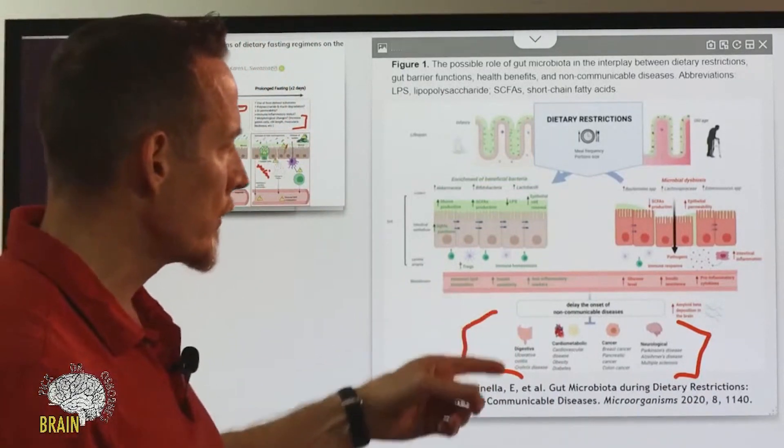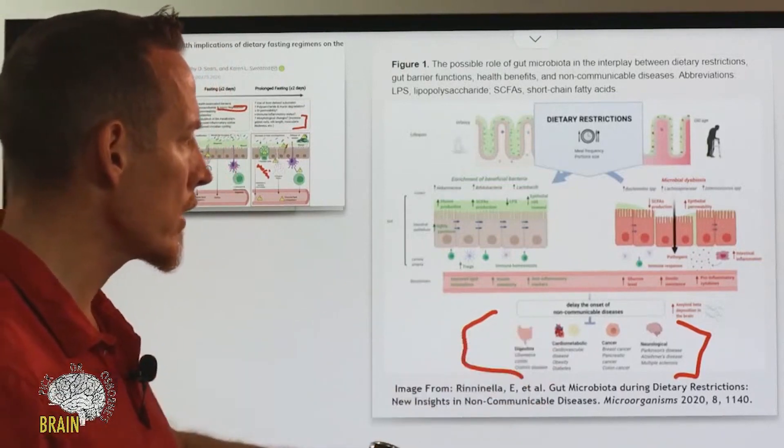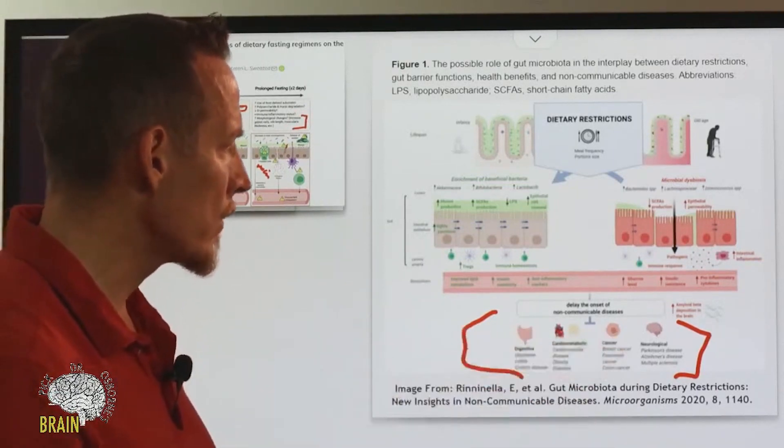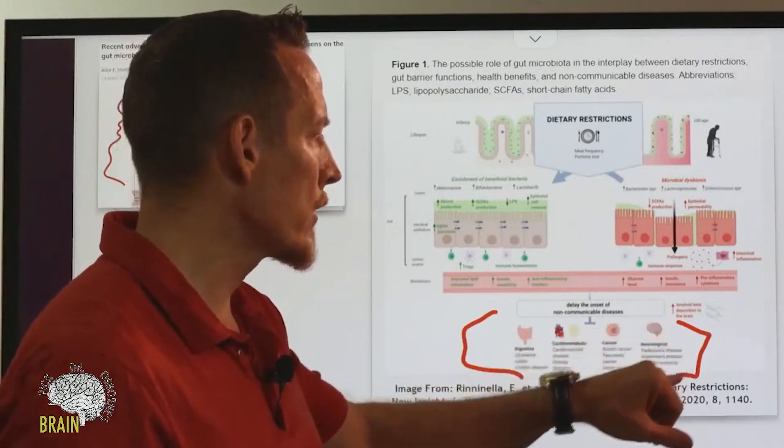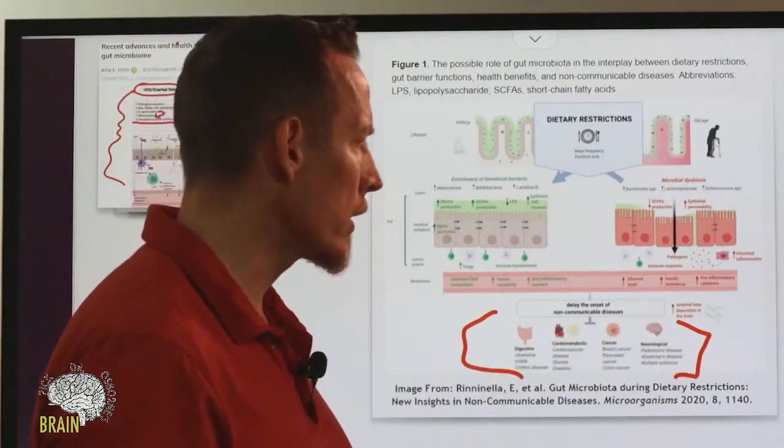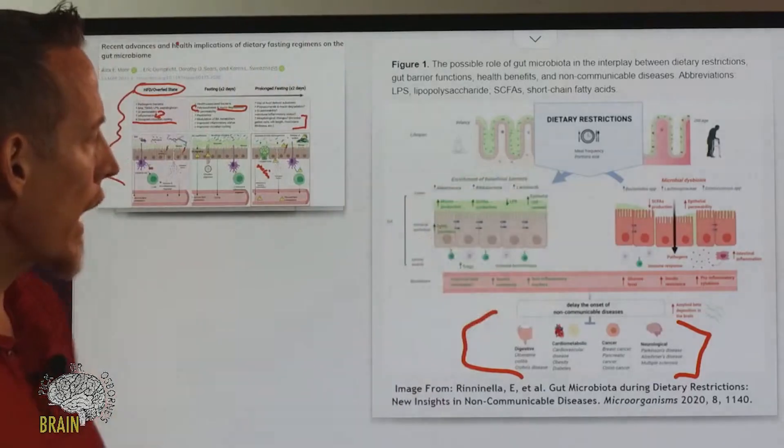These are a number of different diseases that have been associated with just eating bad food and overeating food in general. You've got digestive disorders like ulcerative colitis, celiac, Crohn's disease. You've got heart diseases. You've got different kinds of cancer like breast cancer, pancreatic cancer, and colon cancer. You have nervous system diseases like MS, Parkinson's, and Alzheimer's. Fasting is a very powerful tool.